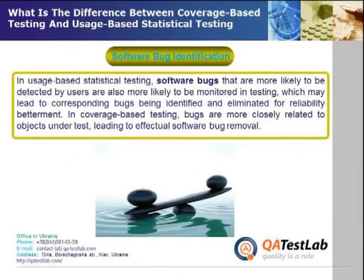Software bug identification: In usage-based statistical testing, software bugs that are more likely to be detected by users are also more likely to be monitored in testing, which may lead to corresponding bugs being identified and eliminated for reliability betterment. In coverage-based testing, bugs are more closely related to objects under test, leading to effectual software bug removal.